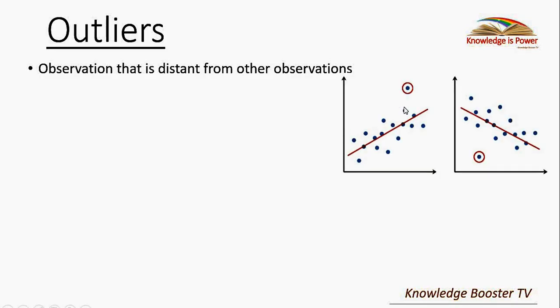Outliers are those observations which are far from most of the other observations. For example, looking at these two pictures, the observations circled in red seem to be slightly far from most of the other observations. However, this is just a visual inspection of the raw data — without doing a proper test using a proper statistical tool, we cannot say whether these two observations are actually outliers.